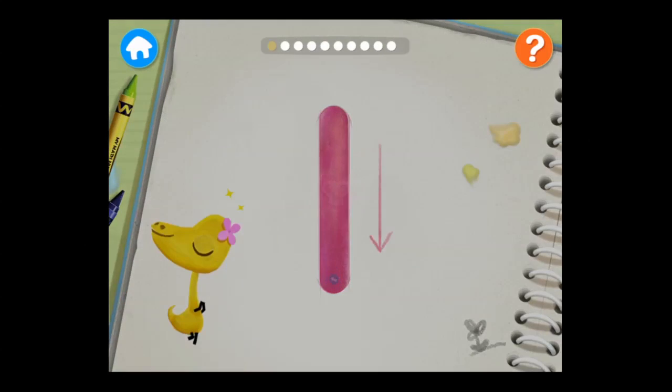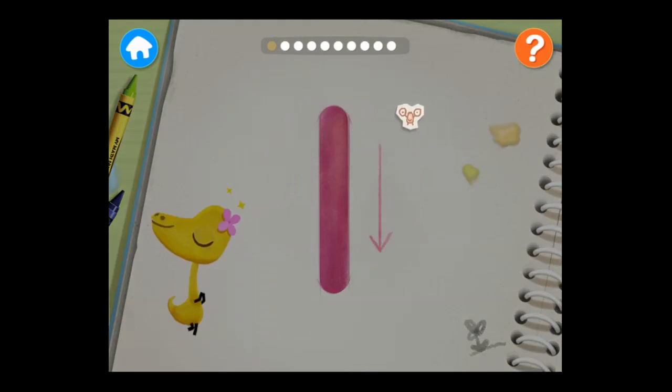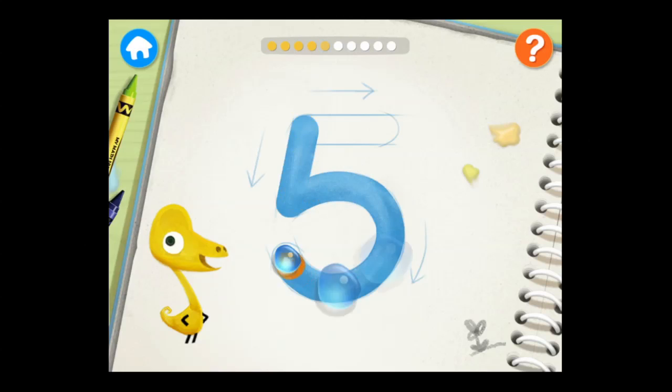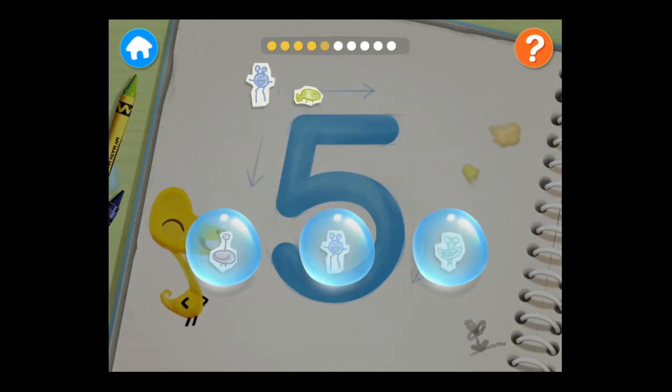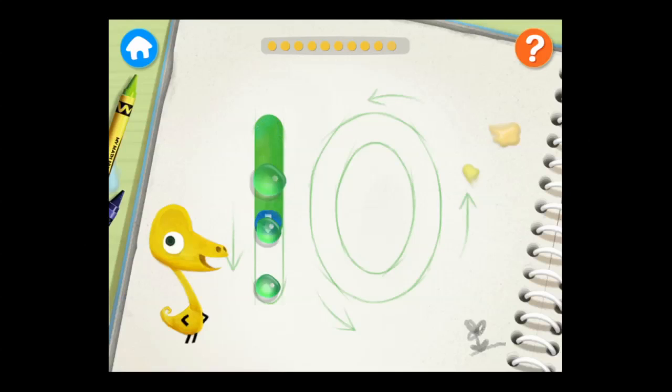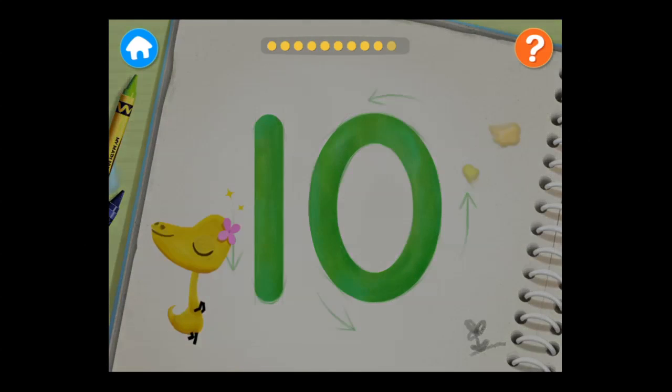This is a new activity where kids learn to draw numbers, and then they pop the bubble to get a reinforcement, and the number is read back to them as well. All the activities are super interactive. After kids draw the number five, they can tap on the bubbles, and the numbers are counted back up to five. One, two, three, four, five. Complete ten.